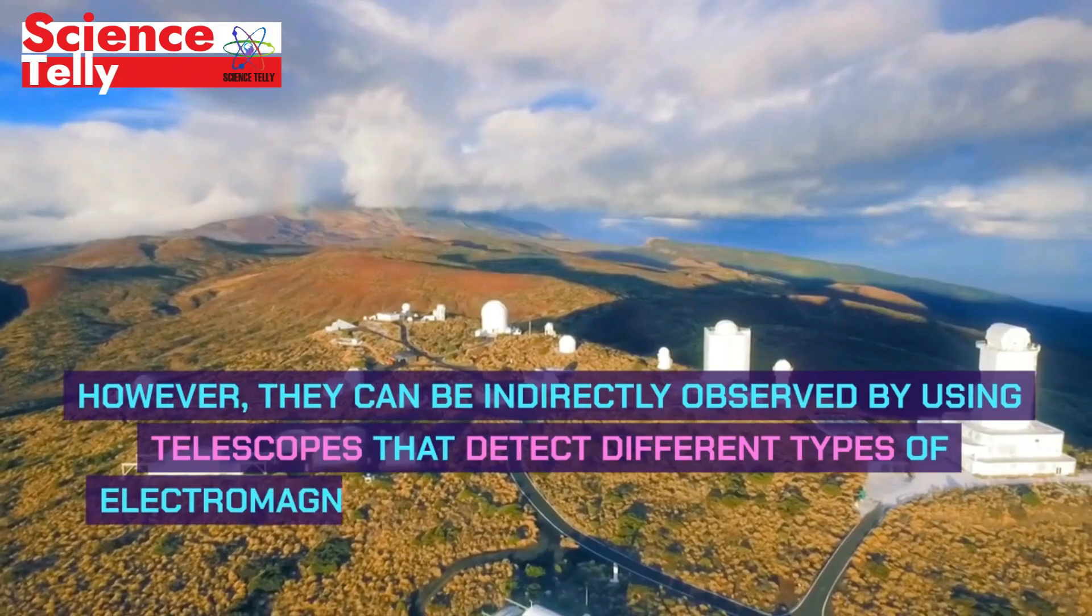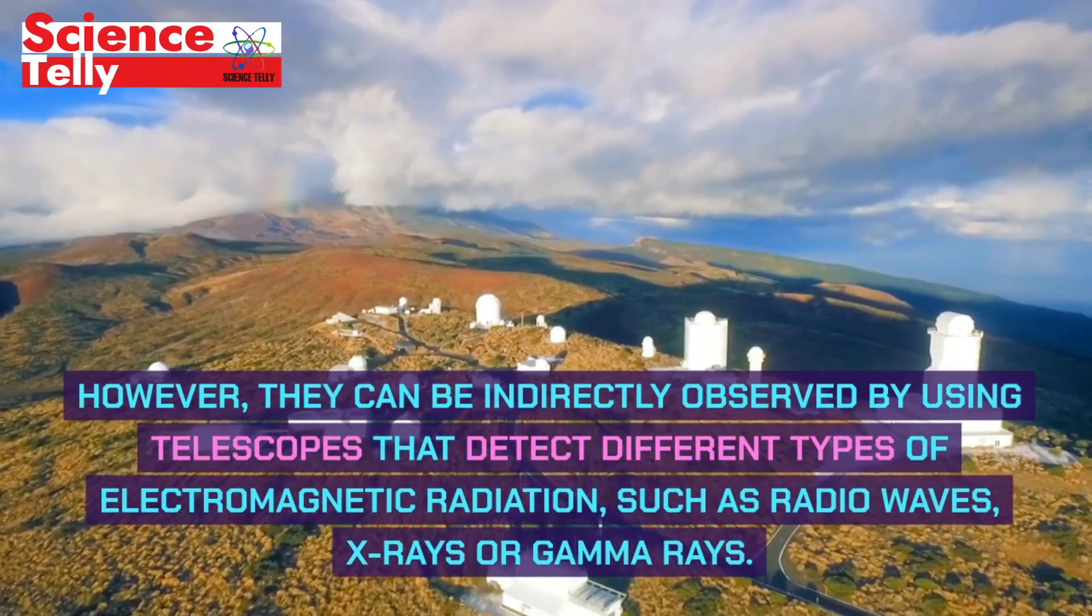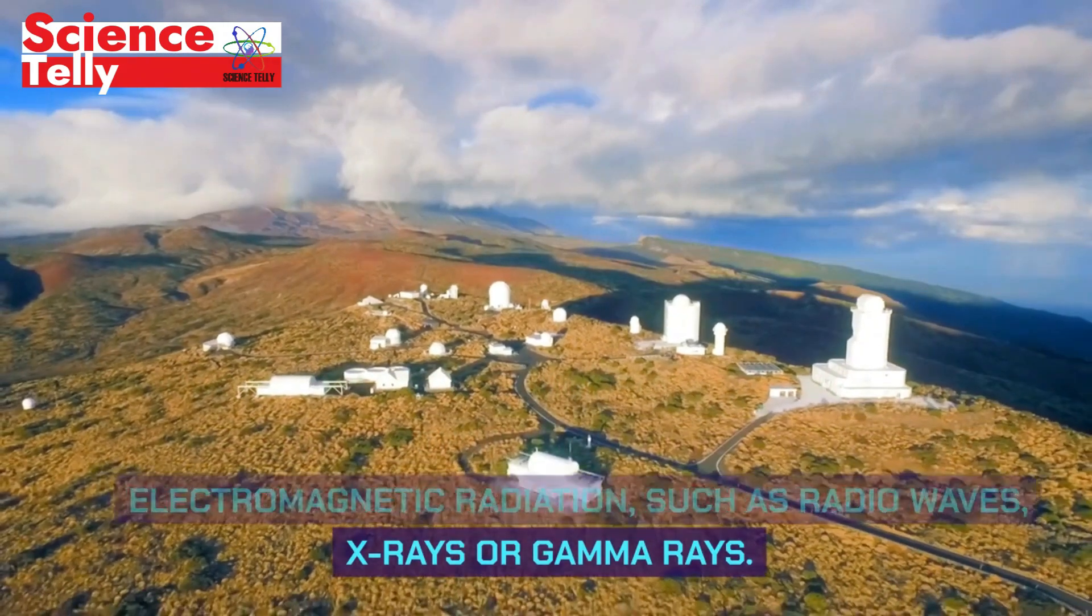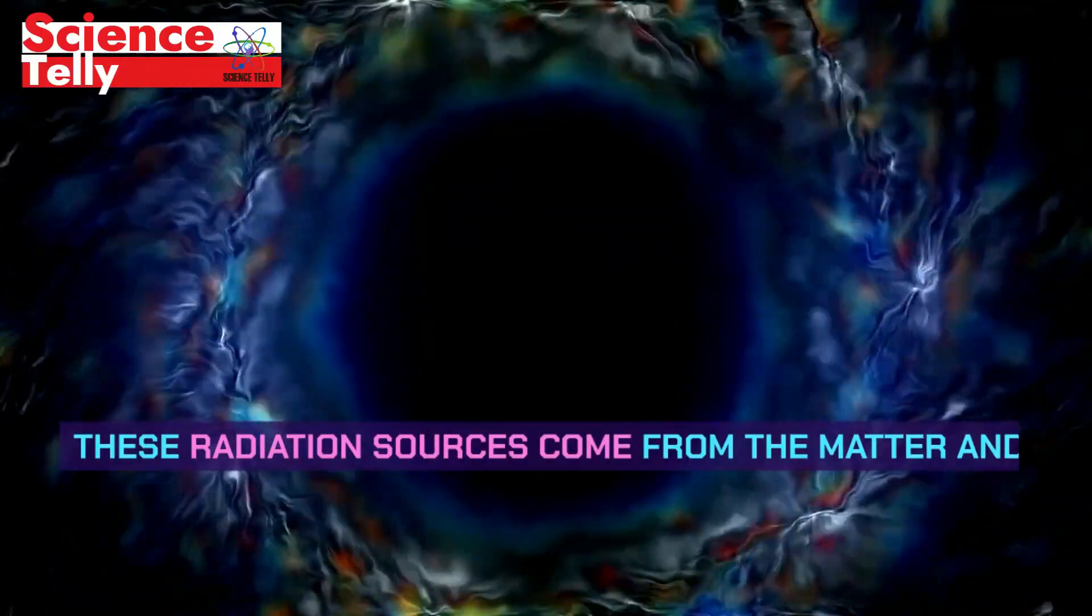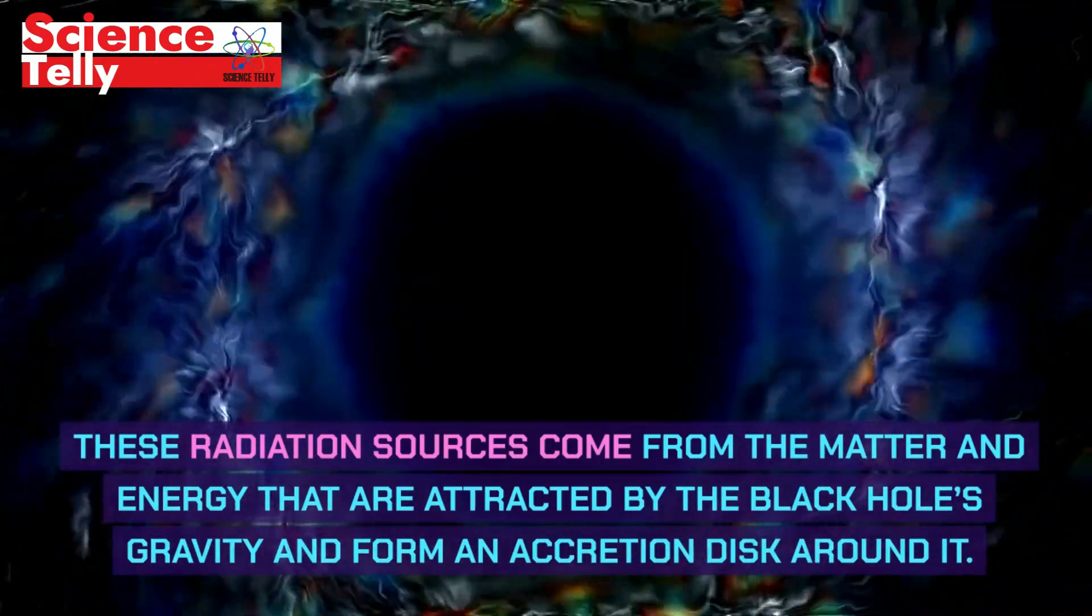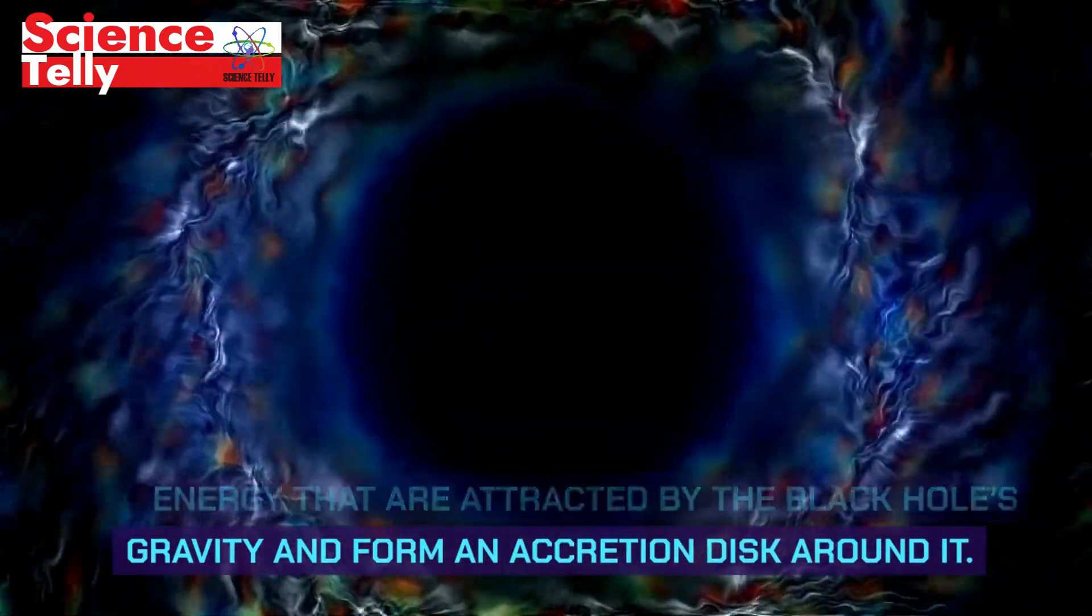However, they can be indirectly observed by using telescopes that detect different types of electromagnetic radiation, such as radio waves, X-rays or gamma rays. These radiation sources come from the matter and energy that are attracted by the black hole's gravity and form an accretion disk around it.